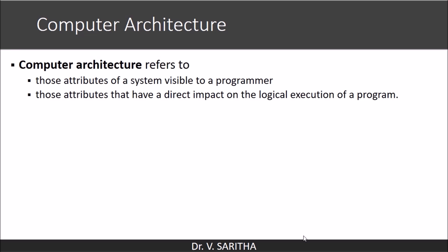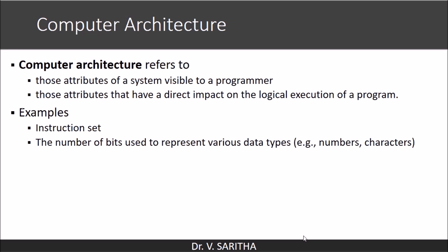Computer architecture also includes those attributes that have a direct impact on the logical execution of the program. For example, the instruction set comes into architecture, and also how many bits will be used to represent each data type — like integer, real number, characters, and so on.